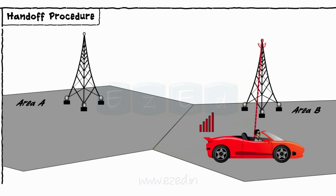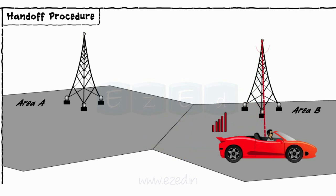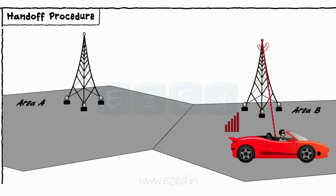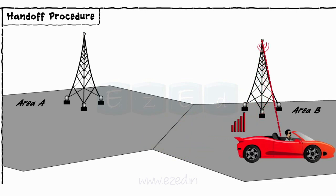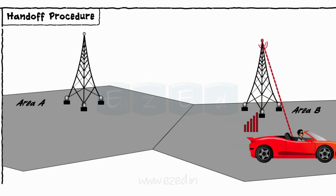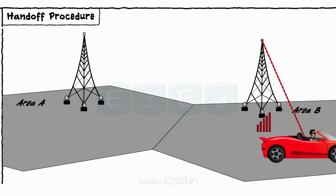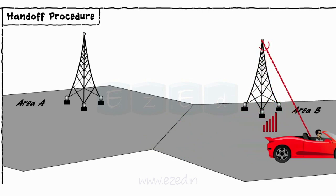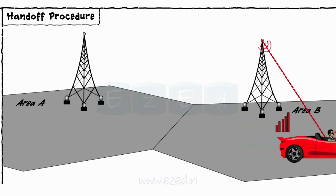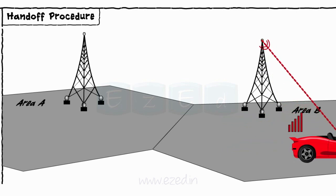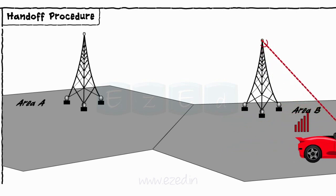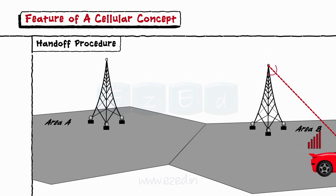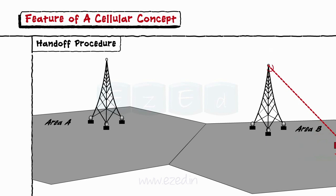In short, the device receives the signal network from base station B. But during this procedure, the call is still on. Hence, base station A hands over this call to base station B without any effect on the call. This procedure is known as the hand-off procedure. This process happens so rapidly that the user never notices it.